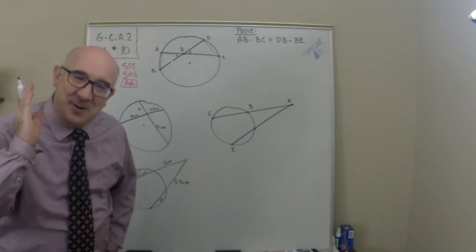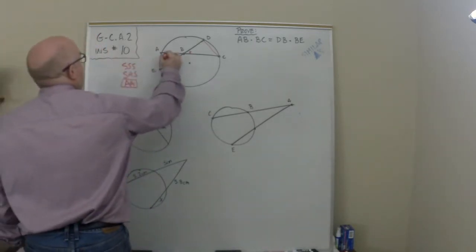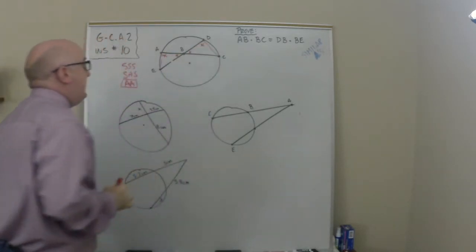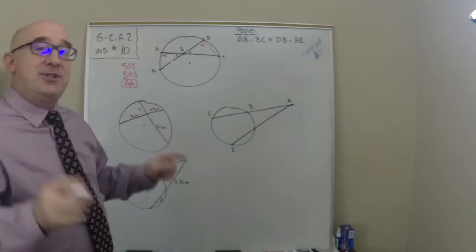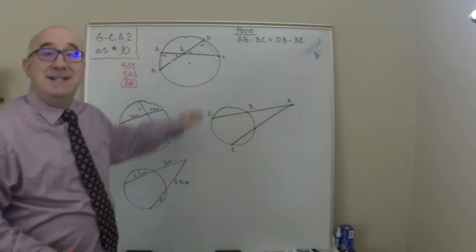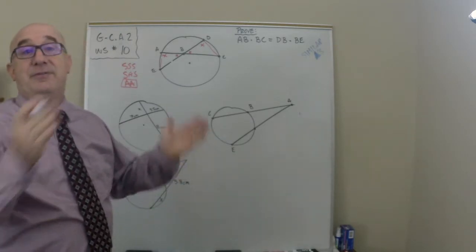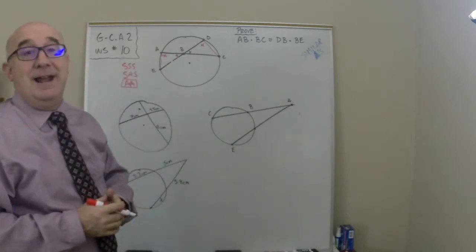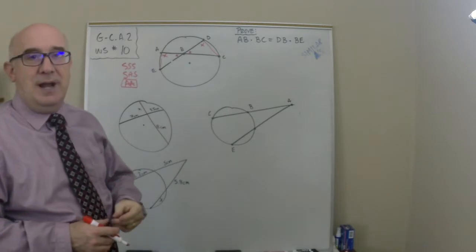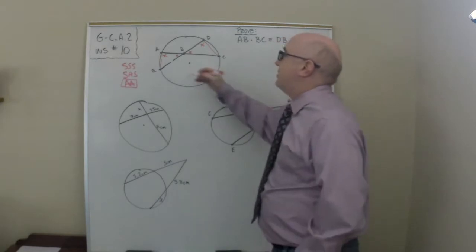Now the second one comes from a lovely relationship. This angle here, angle A and angle D, have to be equal because they are inscribed angles on the same arc E to C. So whatever that arc is E to C, half of that would be angle A and half of that same number would also be angle D.